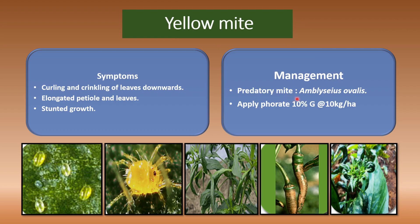Management for yellow mite: follow predatory mite like Amblyseius ovalis, and apply carbofuran at 10% at 10 kg per hectare. For identification: in the egg stage they are oval shaped and white in color. In the nymph stage they are also white. In the adult stage they are large, oval, and yellowish in color. These are the major insect pests of chili destroying the crop.